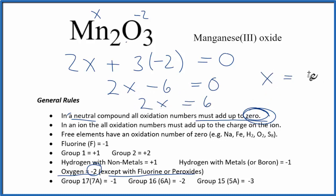So X equals 3, positive 3. That is the oxidation number on the manganese for each one of these two here. So let's put a plus 3 up there, and we're done. That's the oxidation number for the manganese in Mn2O3.